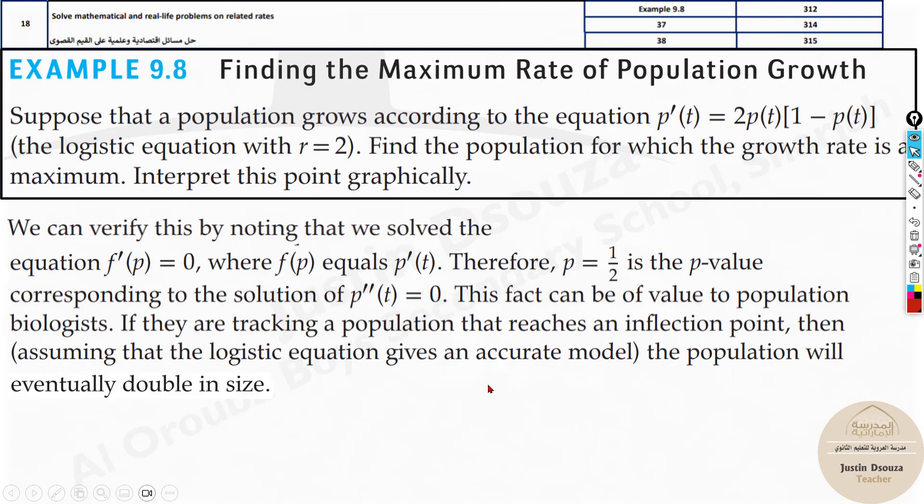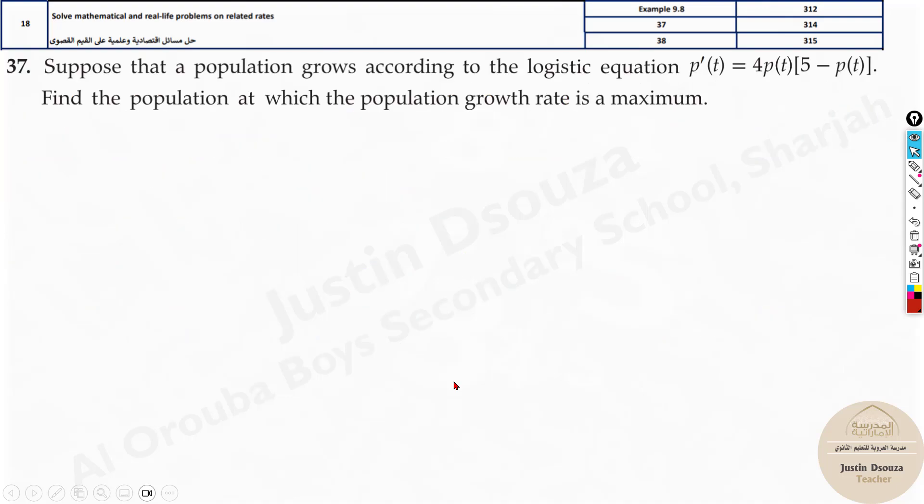And over here, some more information is given. You can just go through this. Now we will solve this problem. Here, the logistic equation is given, p'(t) equals 4p times (5 minus p). So we need to find the population when the population growth rate is maximum.